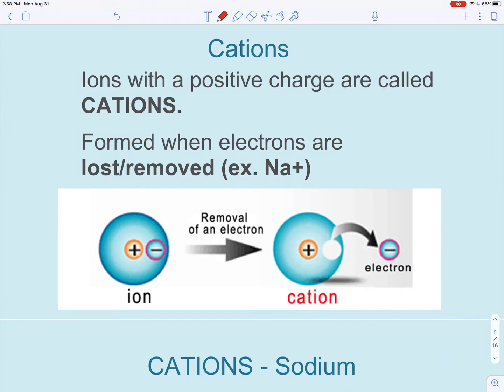Cations have a positive charge. They're formed when electrons are lost. When you lose an electron, you end up with more protons than electrons, and that's how we get a positive charge.